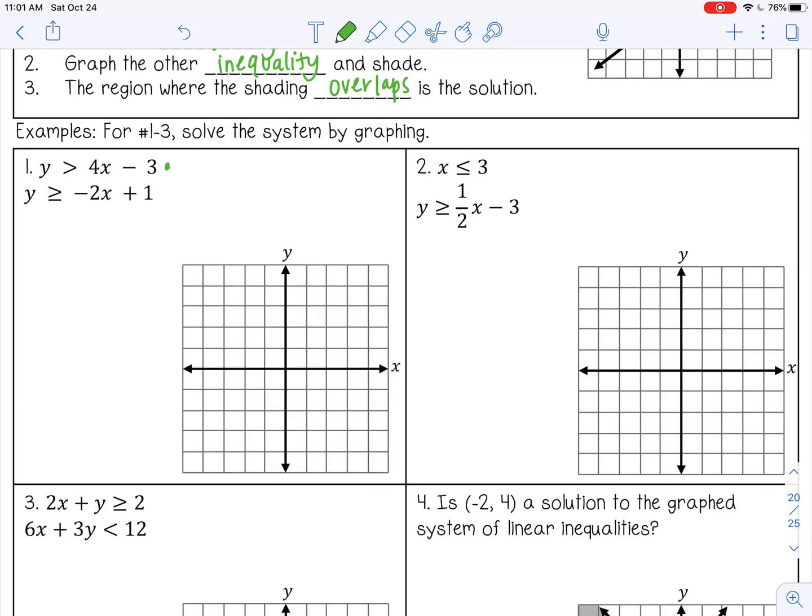So 4x minus 3, negative 3 is my y-intercept. My slope is 4 or 4 over 1, so I'm going to rise 4, run 1, 4, 1. And remember, if it's greater than, that's a dashed line. And it's greater than, so I'm going to shade above.